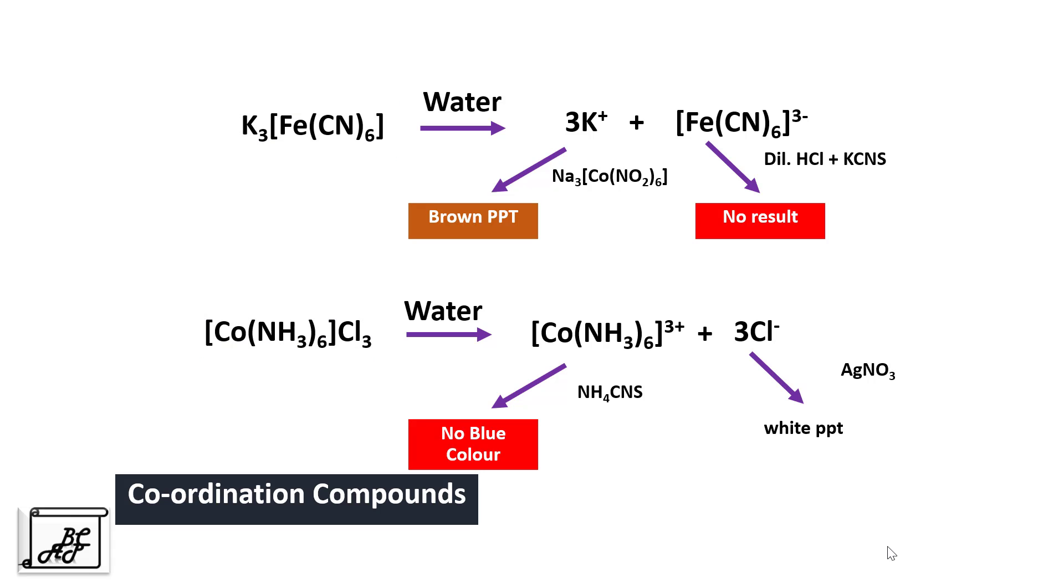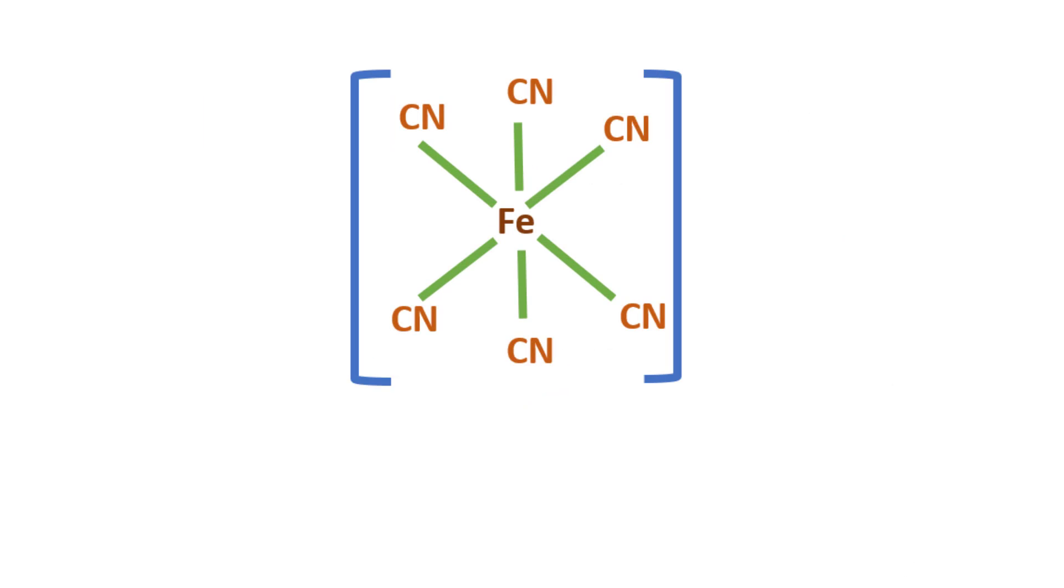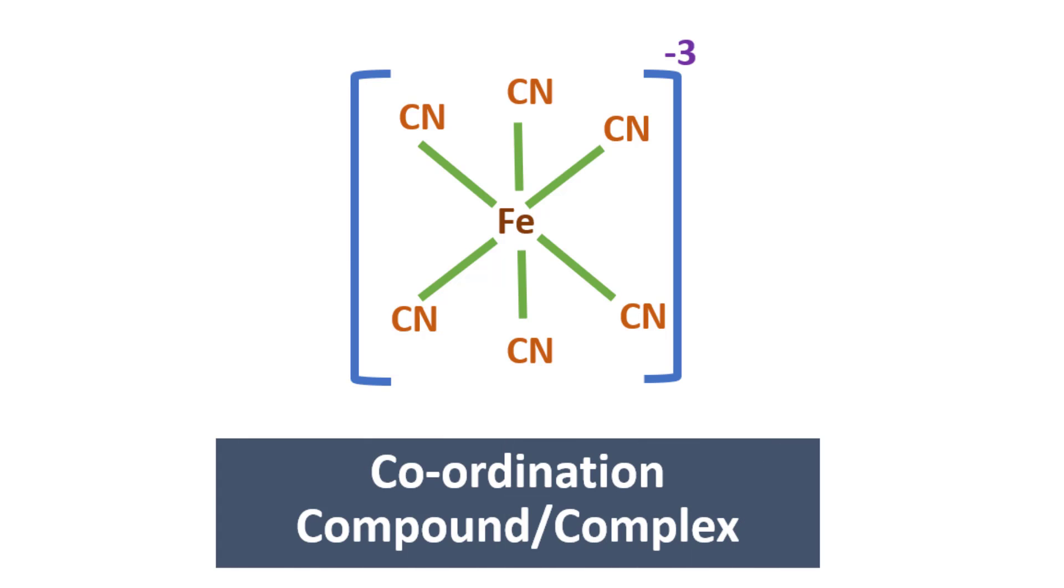So what are the coordination compounds? A coordination compound is a complex compound in which the number of ions or molecules attached to the central metal atom or ion is beyond the number possible on the basis of electrovalent or covalent bonding. For example, in this case, iron could be associated with 2 or 3 cyanide ions that is the plus 2 or plus 3 oxidation state. But in this coordination compound, the iron is associated with 6 cyanide ions.